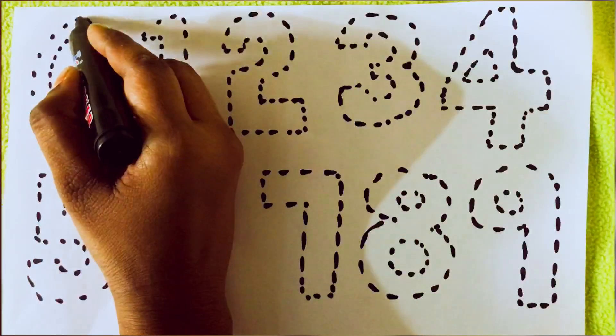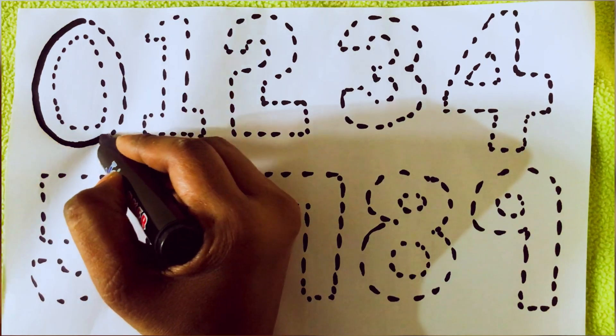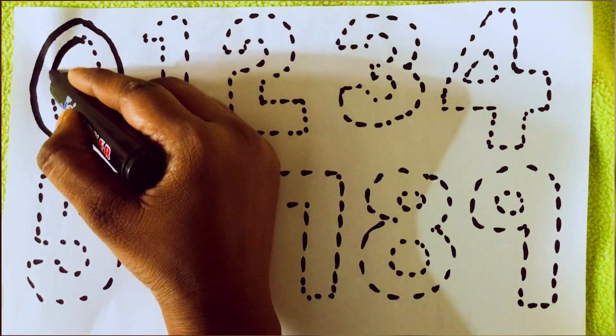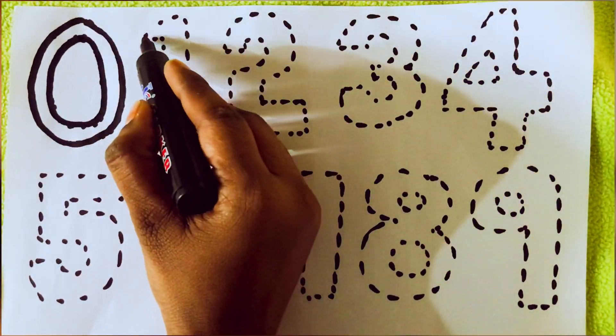Hello kids, let's learn numbers 0 to 9. Let's start with 0, Z-E-R-O, and this is the number 0.